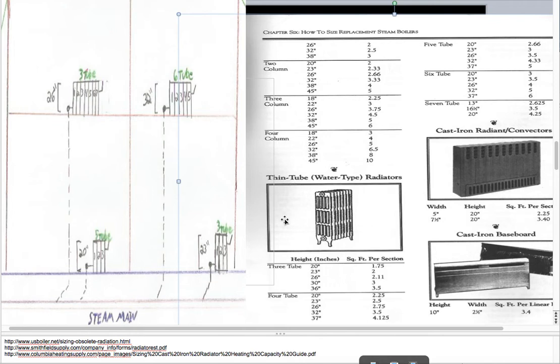Typically, you'll see either column style or tube style. And you just go by the chart. And down here, U.S. Boilers, Smithfield Supply in Rhode Island, Columbia Heating Supply. They're all good resources for finding either out of date radiators or odd sized. Just some more literature on radiators for you if you can't find a radiator on the charts I give you here.